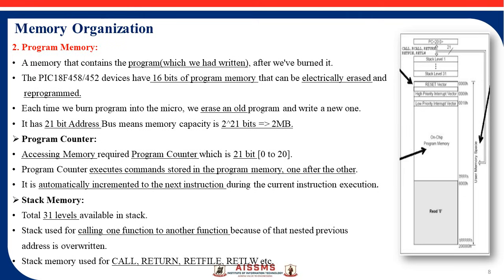Stack memory has a total of 31 levels. Stack memory is generally used for calling one function from another. For example, if you declare a function 'display' and call it from the main function, stack memory is used for that function call. The return statement is also stored in stack memory, along with nested loops and nested functions. All of these — call, return, and return address — are stored in the stack memory, where nested previous addresses may be overwritten.